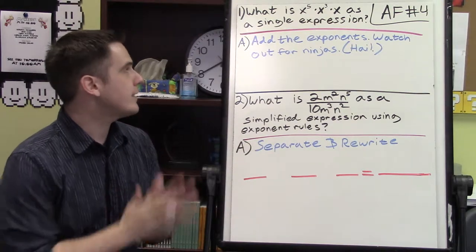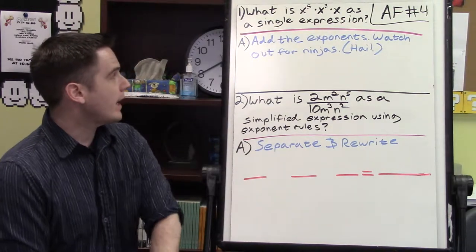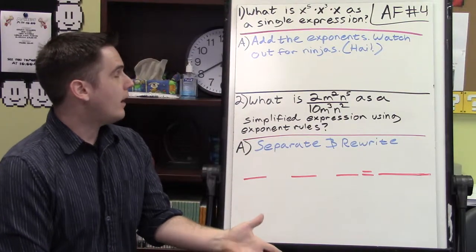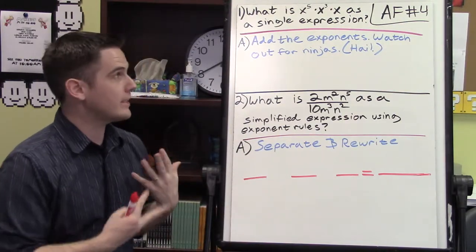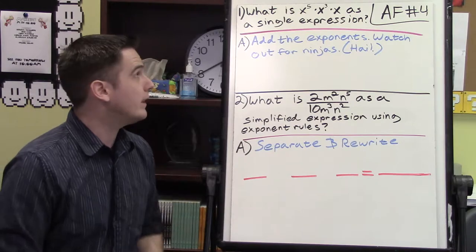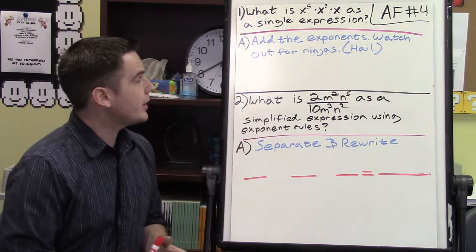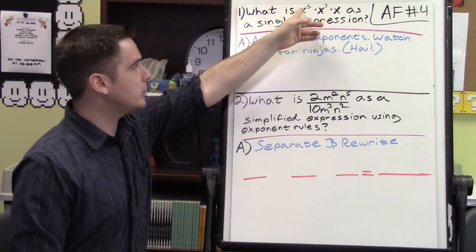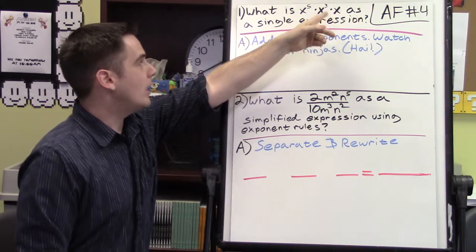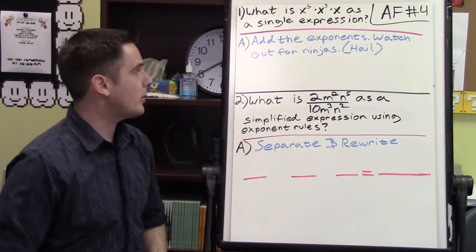What is x to the 5th times x to the 3rd times x as a single expression? This is almost identical to something we did like week 1. You're just going to add the exponents because you're multiplying the same variable, only the exponents are different, and all you do is add the exponents.